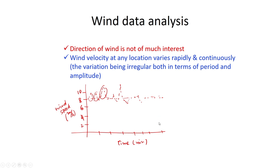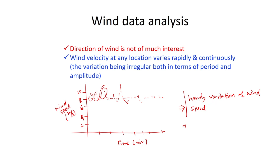What I would like to conclude from this is that we are mostly interested about the hourly variation of wind speed. Sometimes we are also interested about monthly variation and then yearly variation. That means we want the mean over a one-hour interval of time — that is what we are interested about.